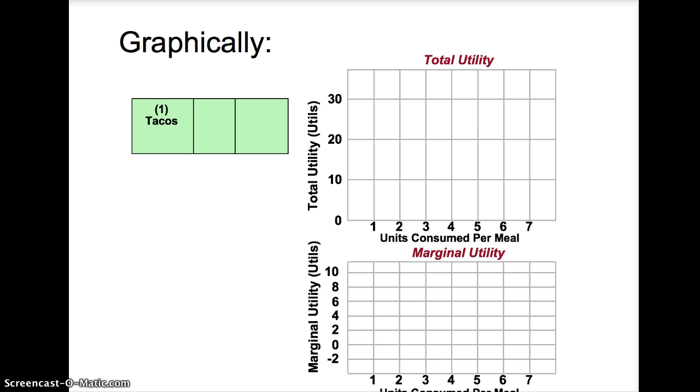Let's look at utility graphically. Total utility from taco consumption will be shown on the top diagram and marginal utility will be shown on the bottom diagram. Taco consumption will range from zero to seven.